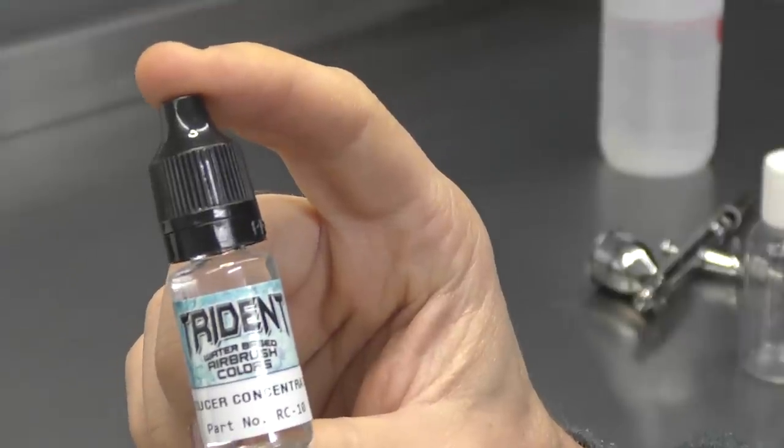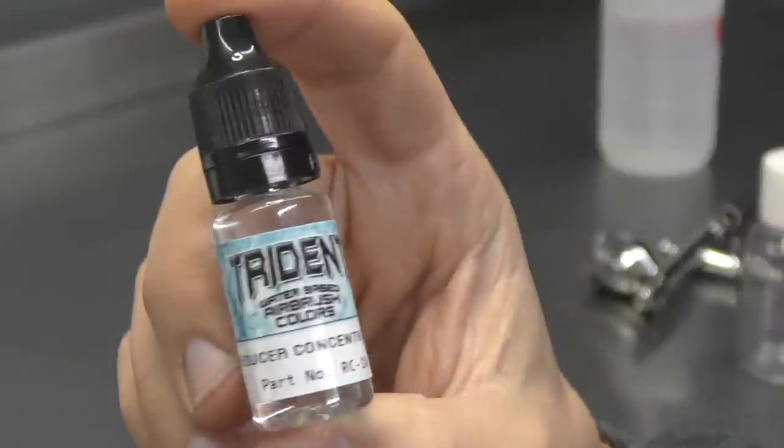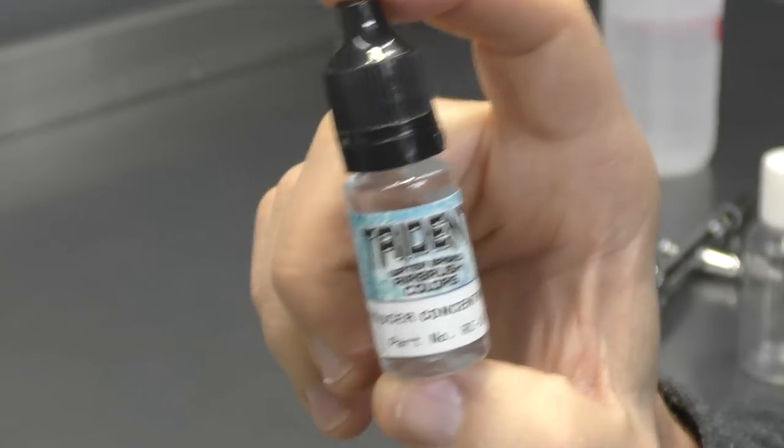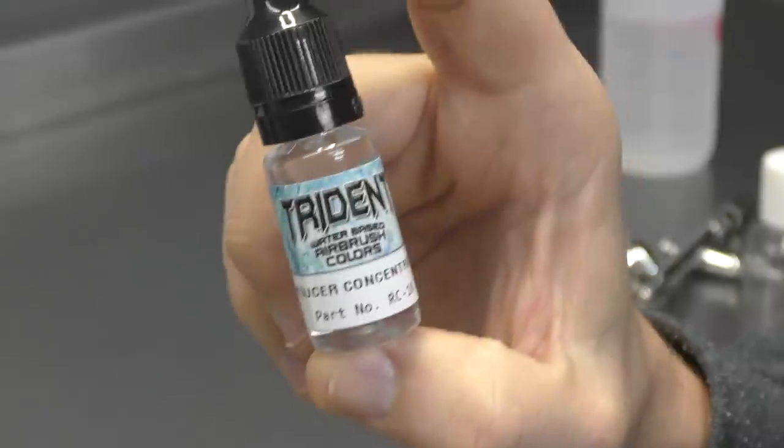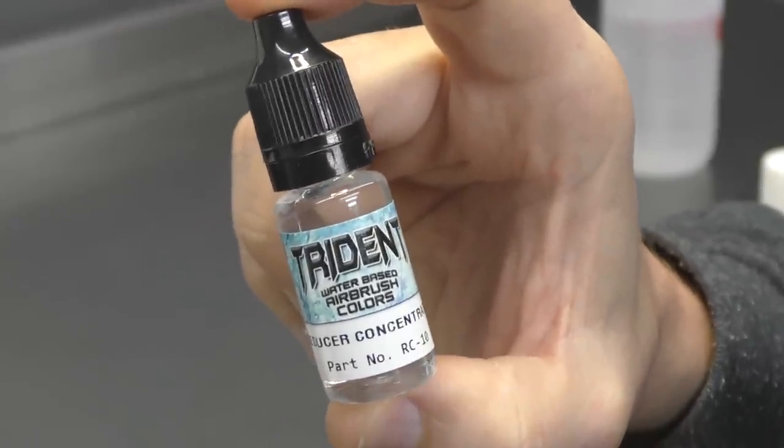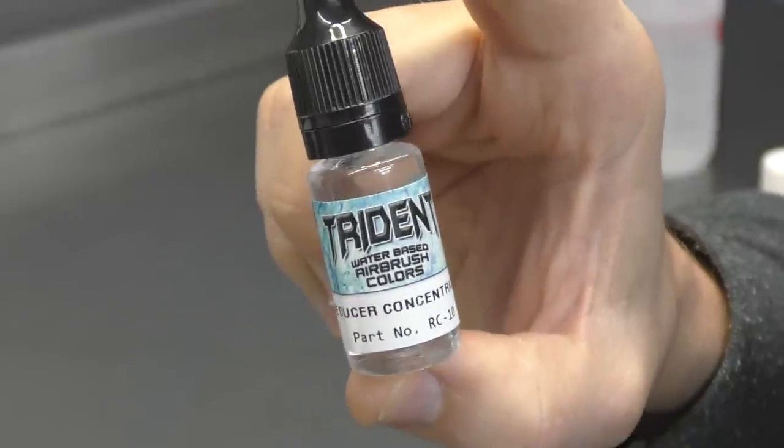So with Trident, they actually package their kits with what's called a reducer concentrate. So this is heavily concentrated reducer, obviously as the name states. You cannot mix this straight into your colors. It will congeal the paint and you're going to have all sorts of trouble.